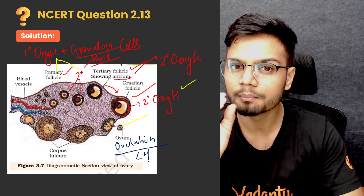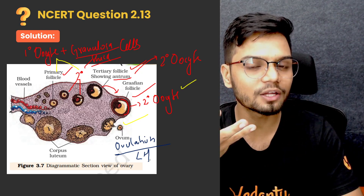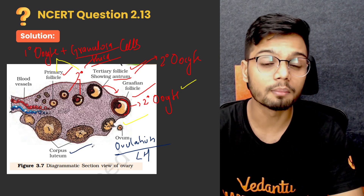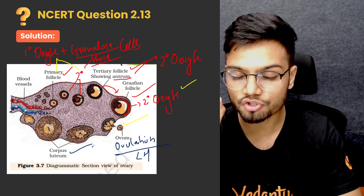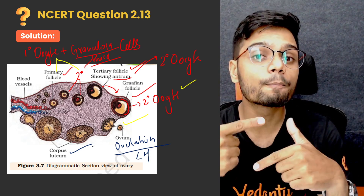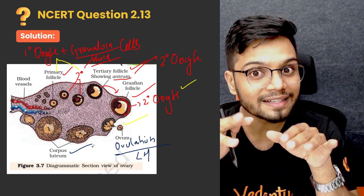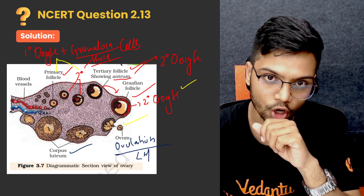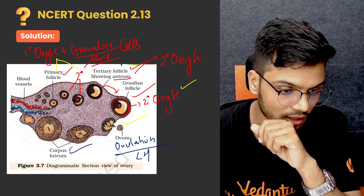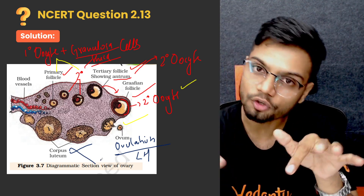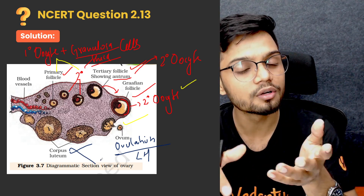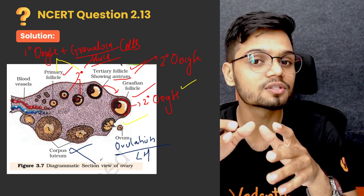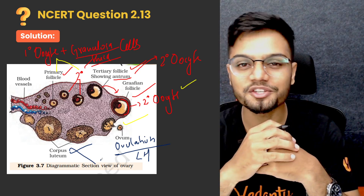But what happens to the remaining part of the Graafian follicle? The remaining of the Graafian follicle turns into the corpus luteum. The corpus luteum has an extremely important role — production of progesterone. The produced progesterone maintains the endometrium for implantation. Once the LH is dropped, the corpus luteum degenerates, progesterone levels go down, and the endometrium gets disrupted.